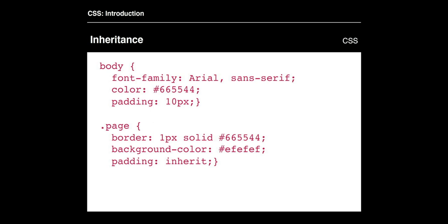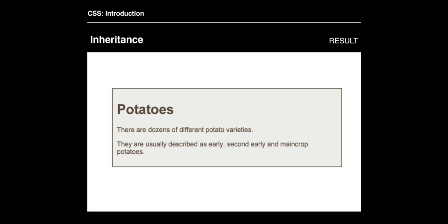Inheritance — you can define something as 'inherit', meaning it inherits a value from its parent element. So body is going to have font family, color, and padding of 10 pixels, and then the page class is going to inherit the padding from body, which is the parent tag — so we should be inheriting 10 pixels from body. Not everything gets passed from parent to children though; color and fonts do, but padding and margin don't.